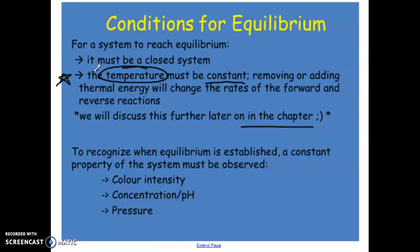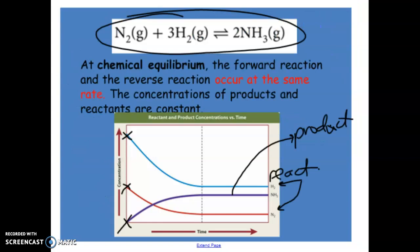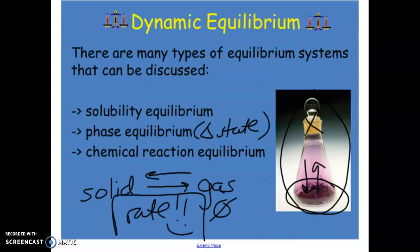When you're looking at equilibrium, it's similar to looking at the rate of a reaction. You have to have something that is measurable over time. You need something that you are measuring over time because we want to wait until we see that there is no change, so we know when equilibrium has been established.